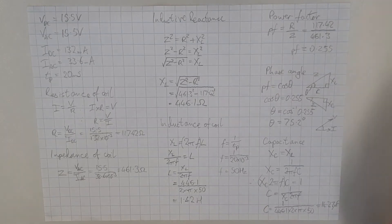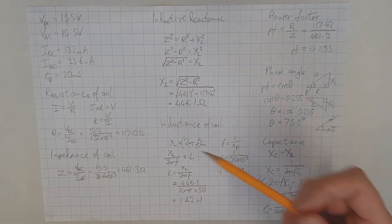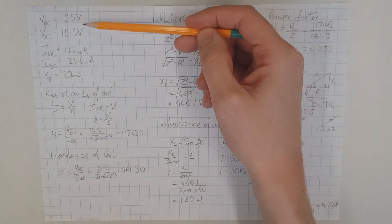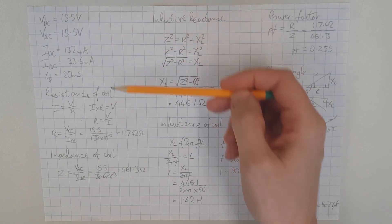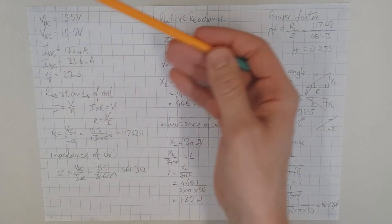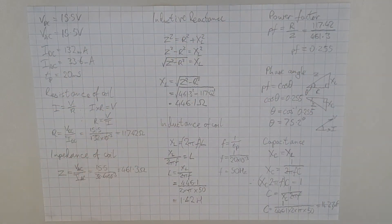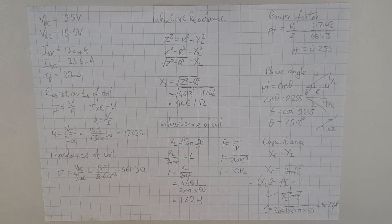We've produced an enormous amount of information just from measurements of voltage, current, and frequency — resistance, impedance, inductive reactance, inductance, power factor, phase angle, and the required capacitance for power factor correction. It's amazing what you can find out from a coil with just a couple of AC and DC supplies and some clever measurements and calculations. Thank you very much for watching — I'll see you next time.